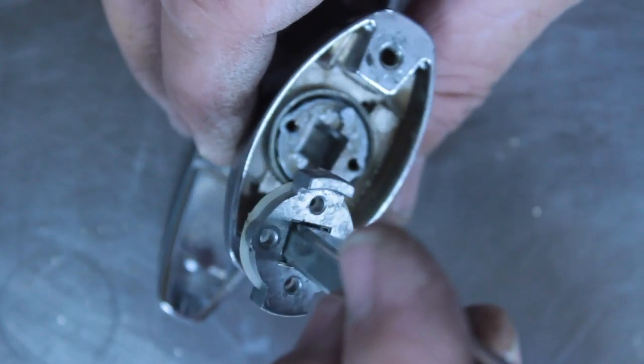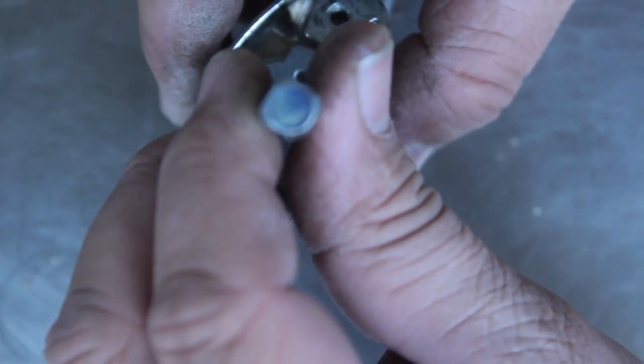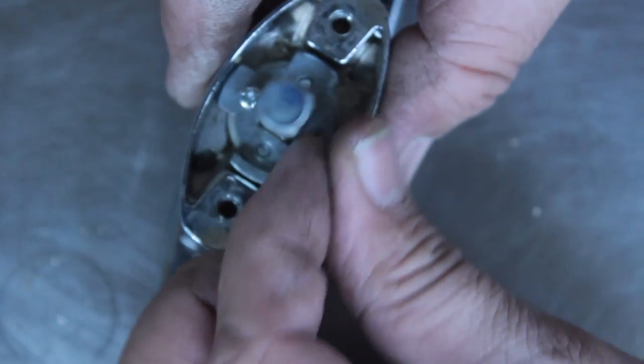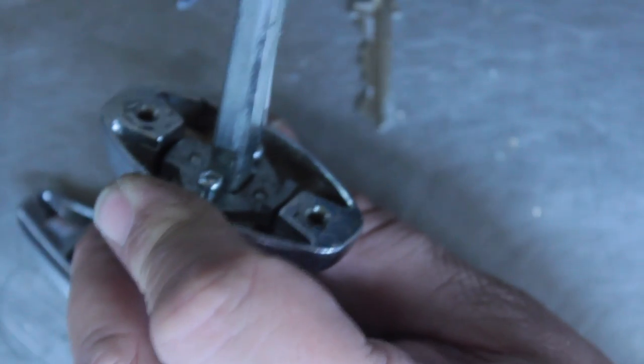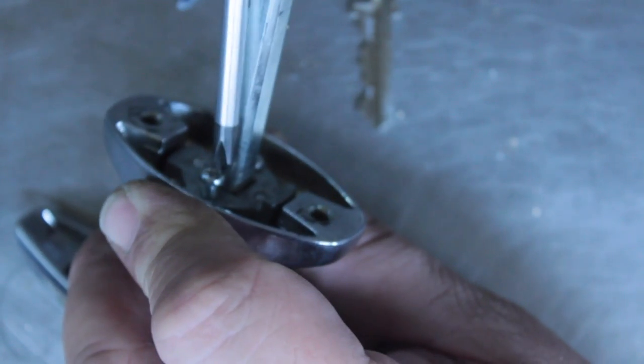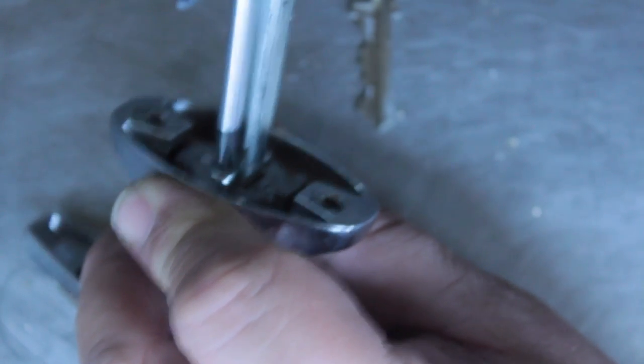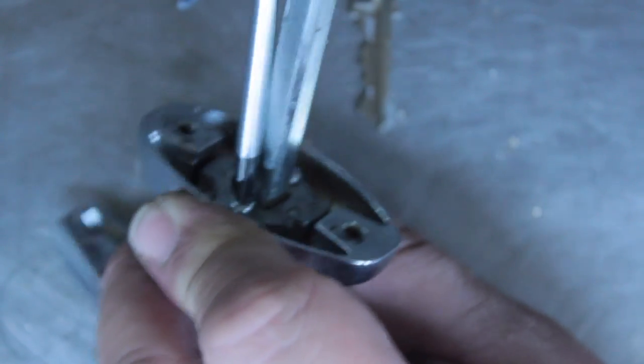Now we've got two screws either side. So we can just line them up. Pop this screw back in here. Tighten them both up. And the lock is complete again.